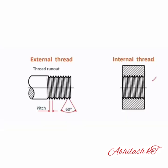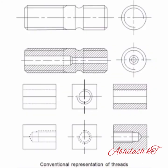External thread is the thread on the external surface of a cylinder or a cone, such as bolt, stud, etc. Internal thread is the thread on the internal surface of a cylinder or a cone, such as a nut, threaded hole, etc. Conventional representation of threads: the representation of a threaded part is independent of the type of screw thread applied. The type of true thread and its dimensions are indicated by standard designations. The conventional representation of external and internal threads recommended by BIS is shown in the figure.